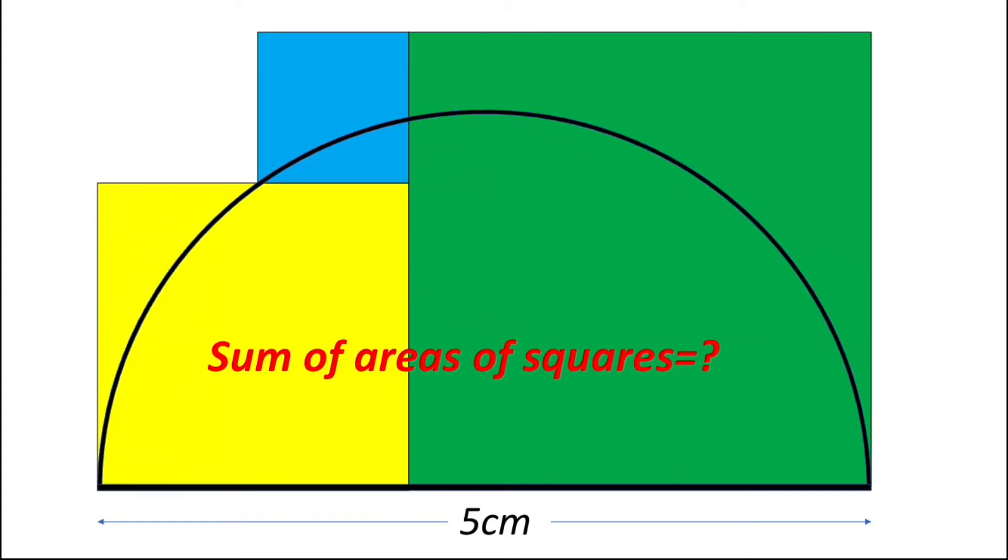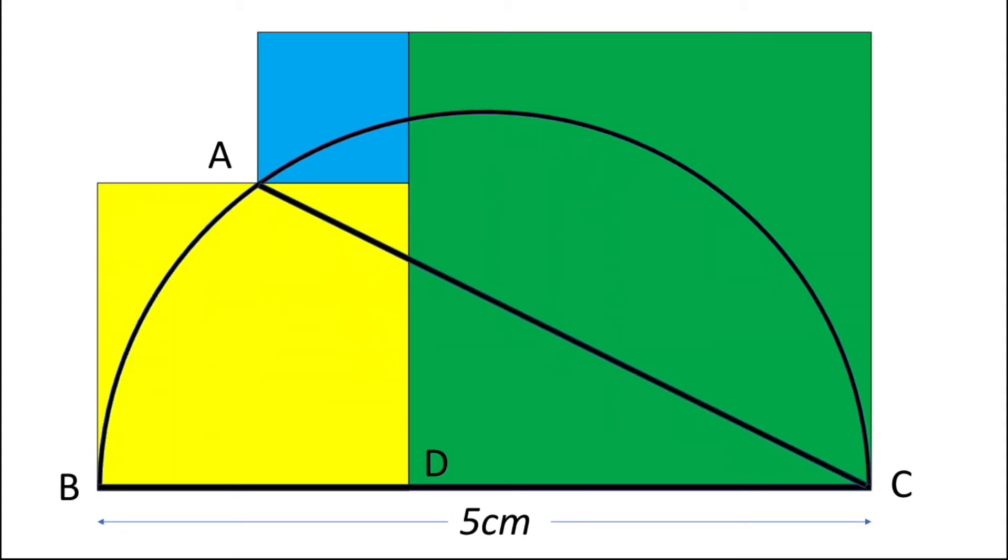So let's start the problem. How to solve? Let us label the diagram. Let's take these points A, B, C, and D. Join A to C, join A to B. Now since angle BAC is inside the semicircle, so this angle BAC will be 90 degrees because we know that the angle in the semicircle is 90 degrees.